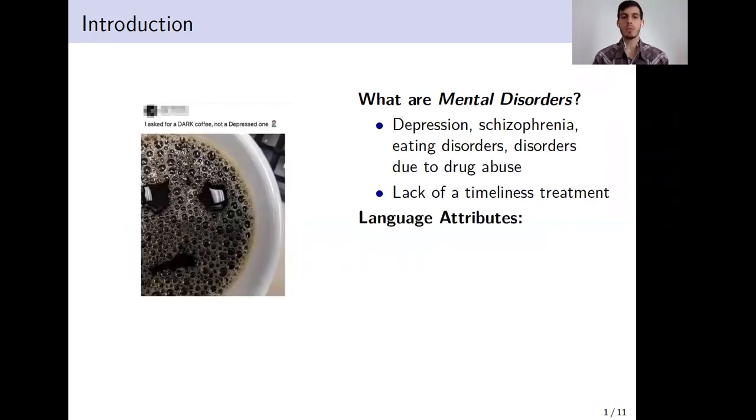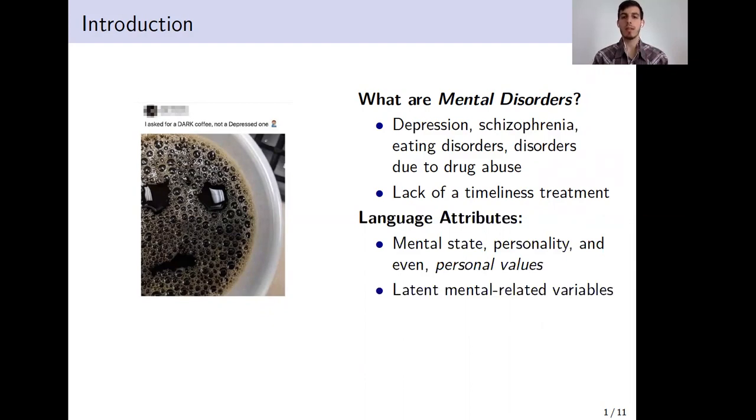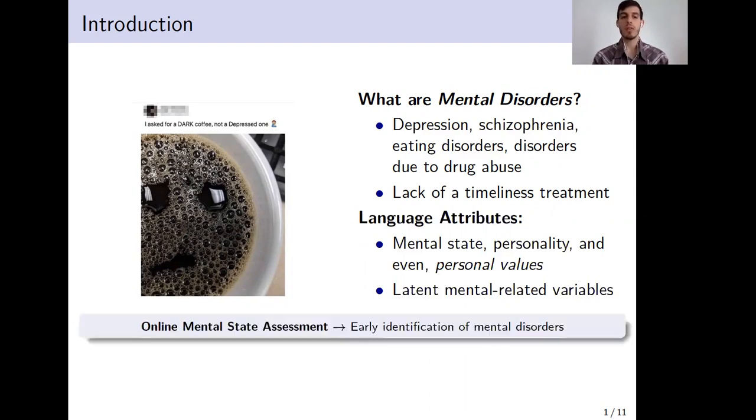What can we do from the side of computer science? Research on language and psychology has shown that several useful cues about the individual's mental state, including their social and emotional conditions, could be identified by examining their patterns of language use. In fact, language attributes could act as indicators of the current mental state, personality, and even personal values. This is because such mental-related variables are encoded in the words that individuals use to communicate. Moreover, an increasing number of users are using social media platforms to share their feelings, thoughts, and moods on a daily basis, and therefore these sites have become promising sources of data to study different mental disorders such as depression.